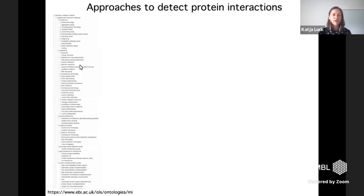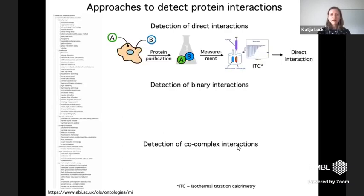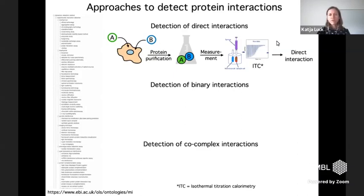This is just a snapshot of the many interaction detection assays that exist. We can very roughly group these into three categories based on the type of interaction data they generate: methods to detect direct interactions, binary interactions, or co-complex interactions. Methods to detect direct interactions are based on the expression of two proteins A and B in a cellular system — often bacteria — where you break open cells to extract and purify these proteins, and do measurements in vitro using machines like isothermal titration calorimetry. Because you only have protein A and B in your sample, if you detect an interaction you can be sure it is a direct interaction — but these methods often only work for fragments of proteins and not full-length proteins.